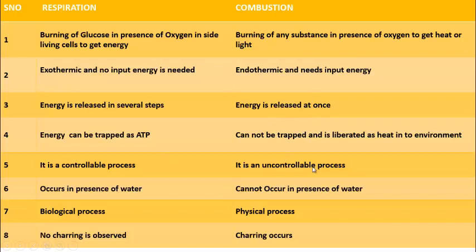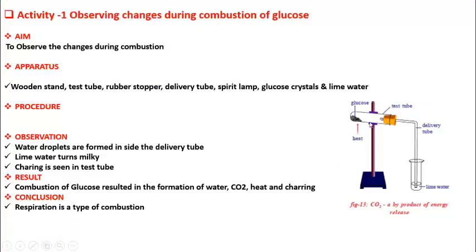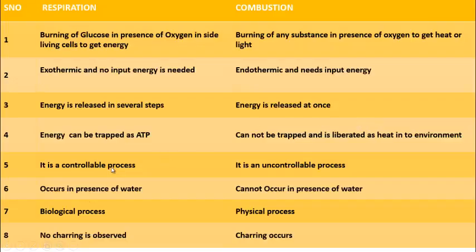Combustion is an uncontrollable process. Once we set fire, the reaction happens uncontrollably — we can't stop the reaction midway. Once we heat the glucose, it combusts and liberates the products and we can't stop it. But respiration is a controllable process because it is a multi-step one. At any step, it can be stopped for some reasons inside cells.